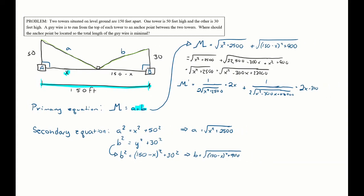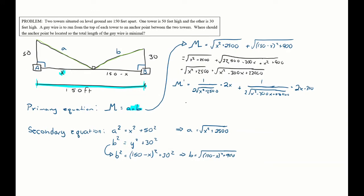Simplifying: the 2's cancel, and I can factor a 2 from (2x − 300) to get (x − 150), so the 2 cancels there as well. The simplified derivative is: x / √(x² + 2500) + (x − 150) / √(x² − 300x + 23,400), and we set that equal to zero.